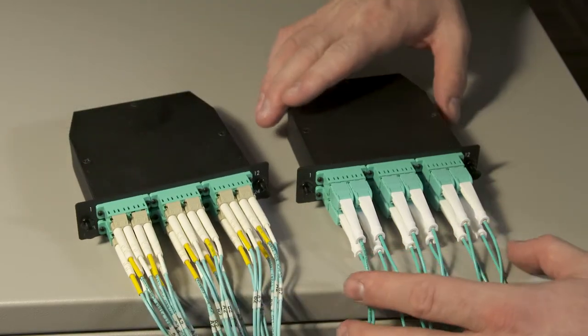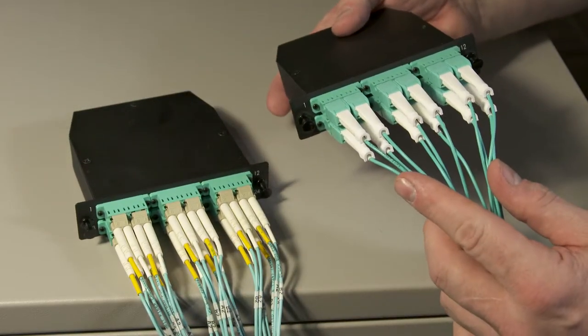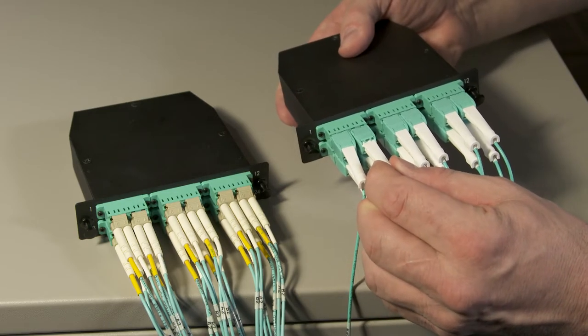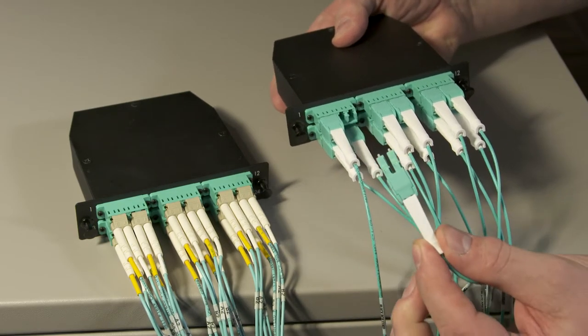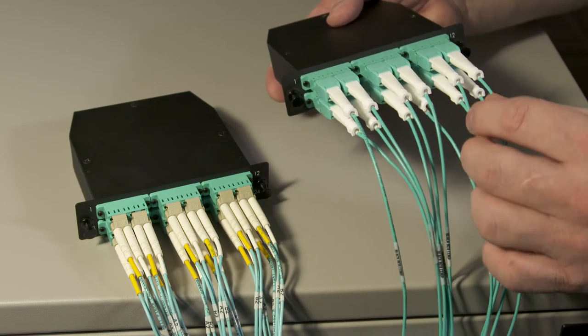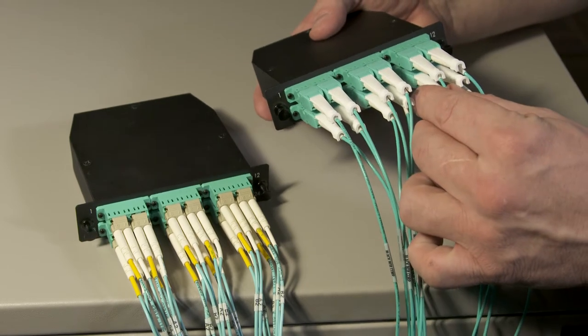With the pull tab feature that our premium assemblies have, all you need to do is pull the tab and it automatically releases. Making removal very easy and installation just as easy. This is especially important if you're working with the lower row here.